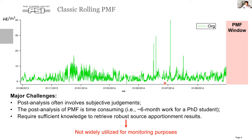Instead of running the PMF for the whole dataset, it takes a smaller time window, like 14 days, to roll over the whole dataset with a step of one day to allow the factor profile to change over time. However, all these post-analyses often involve subjective judgments, are time-consuming, and require the user to have sufficient PMF knowledge to retrieve meaningful source apportionment results. All these challenges eventually lead to little popularity of source apportionment for monitoring purposes.